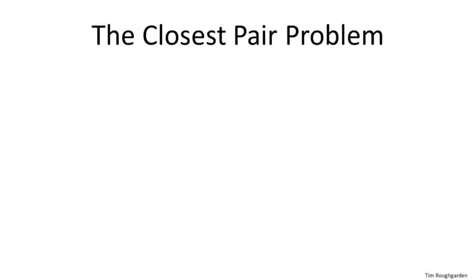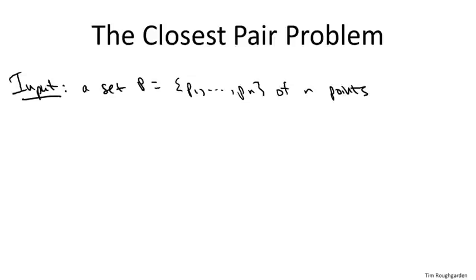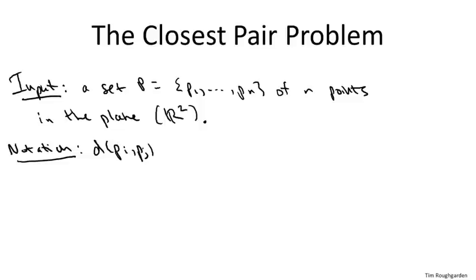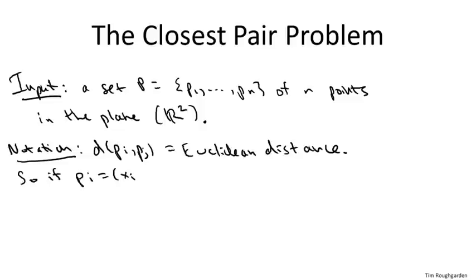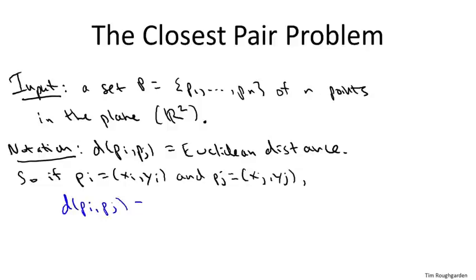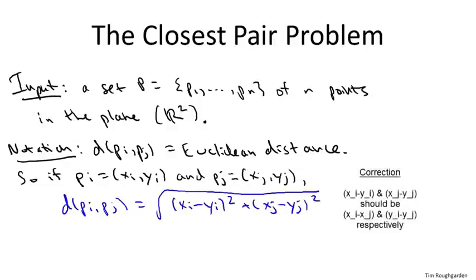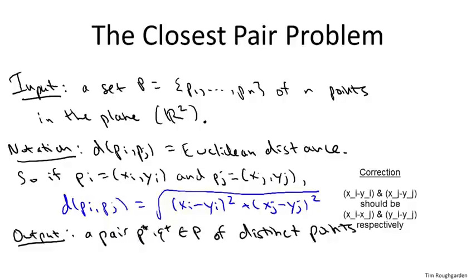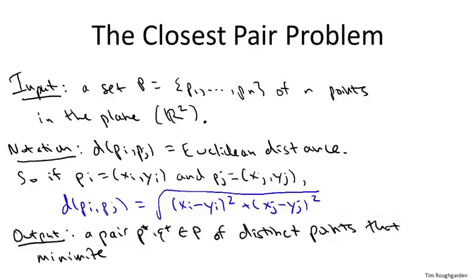Let's begin by defining the problem formally. We're given as input endpoints in the plane, each defined by its x coordinate and its y coordinate. When we talk about the distance between two points in this problem, we're going to focus on Euclidean distance. We'll denote the Euclidean distance between two points Pi and Pj by d(Pi, Pj) — we look at the squared differences in each coordinate, sum them up, and take the square root. The goal is to identify among all pairs of points that pair which has the smallest distance.